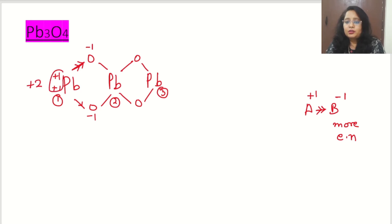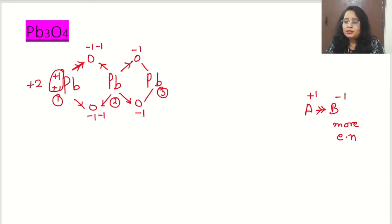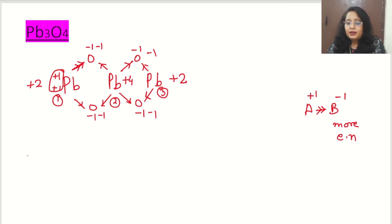Now for lead number 2, there are 4 bonds with oxygen. Every bond gives oxygen −1, so that is −1, −1, −1, and −1. Lead number 2 therefore acquires a +4 charge — we can say directly it has oxidation state +4. For lead number 3, there are again 2 bonds, so −1 and −1, and lead in turn becomes +2.